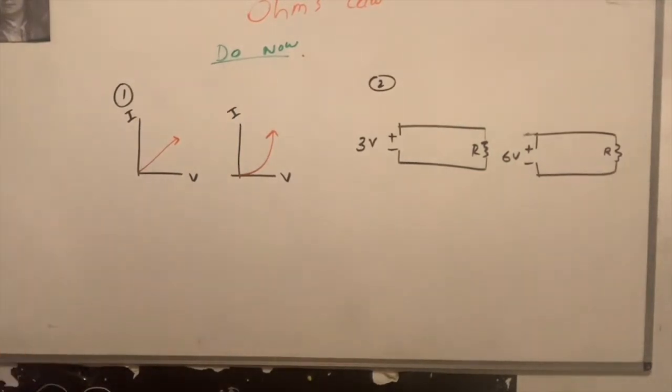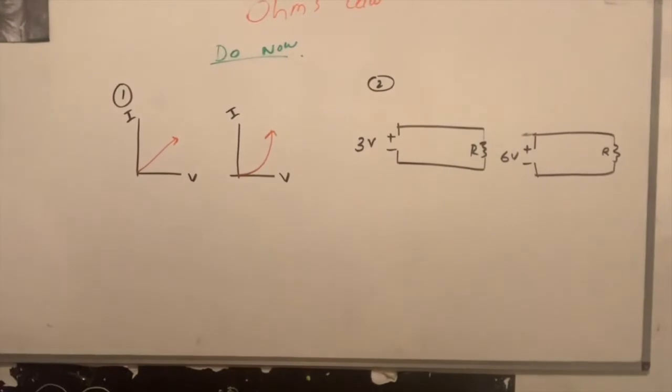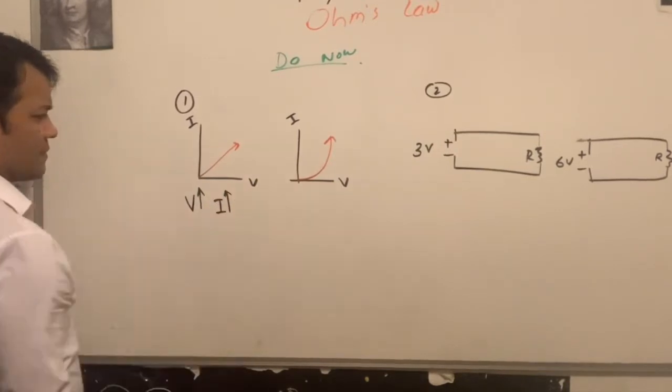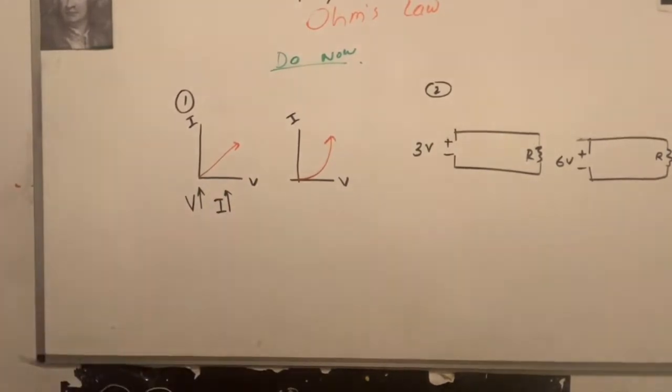What does this tell you? This relationship tells you? Does it tell us that V is proportional to I? Tell me when V goes up, I goes up. It also tells you the slope, right?